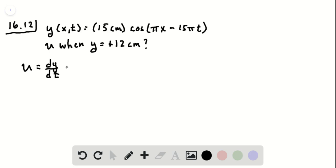So this is 225 pi centimeters—or 225 centimeters per second I should say—times the sine of pi x minus 15 pi t. Now if we know that this is 15 times 15, then what we can do is square u and add it to the square of 15 pi times y.